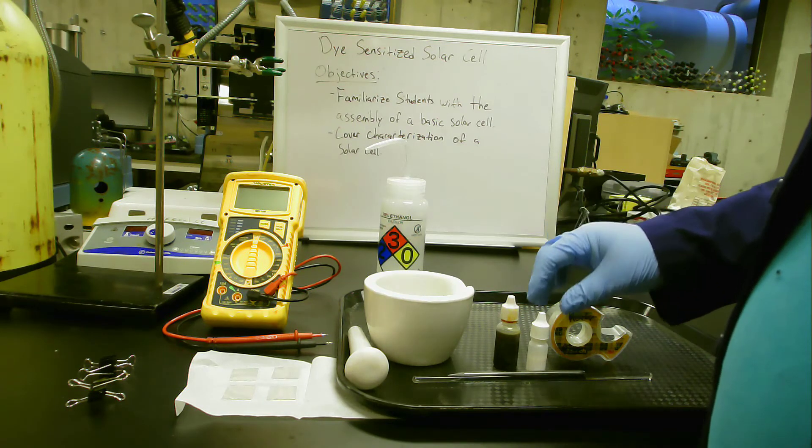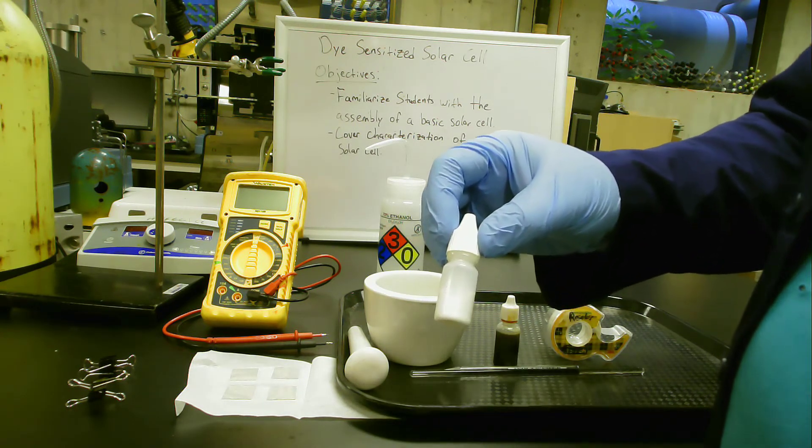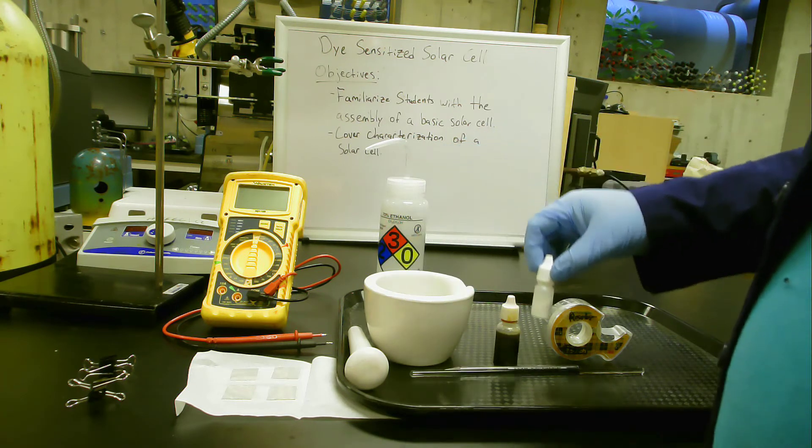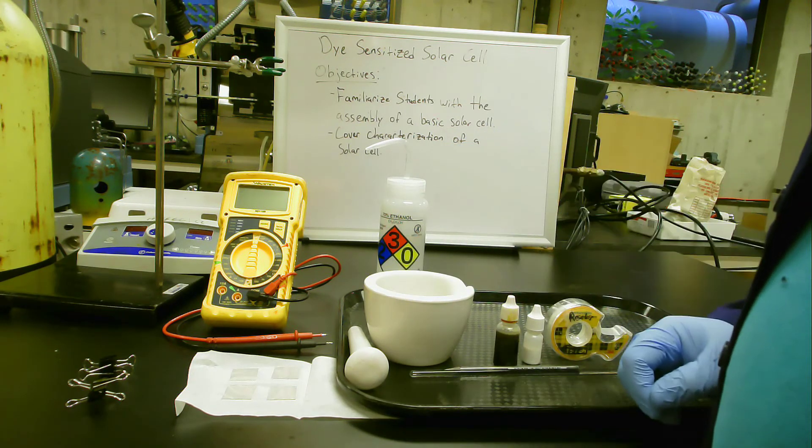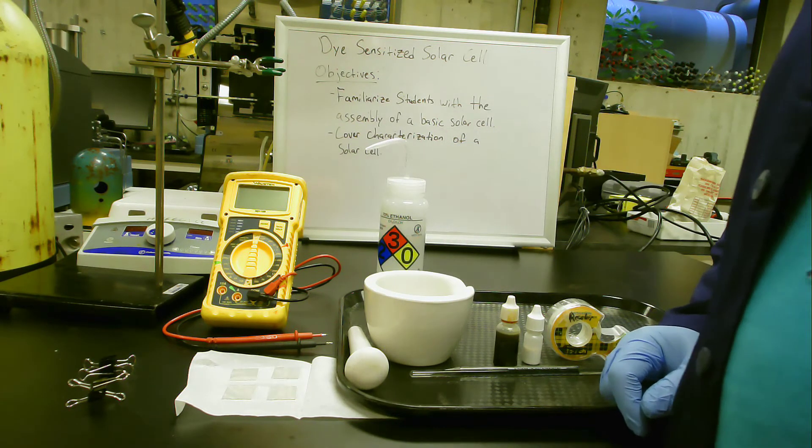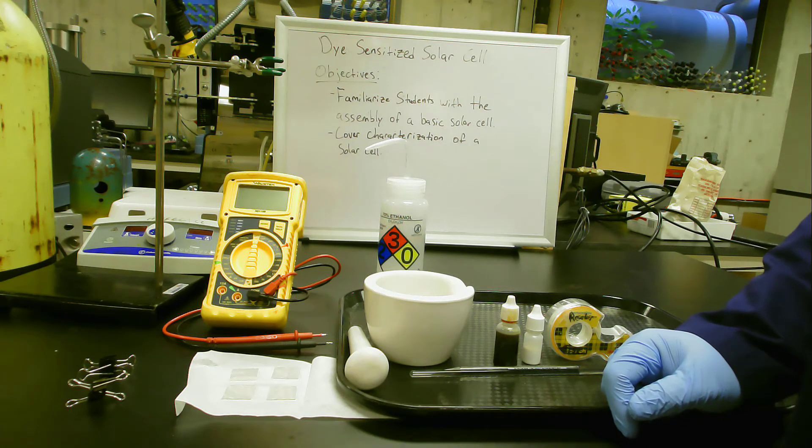The white solution there is a titanium dioxide suspension. This is what we're going to use to make the nanocrystalline titanium dioxide layer that will form the actual solar absorbing part of our cell.